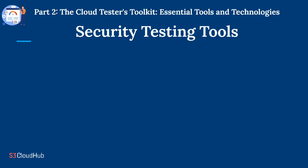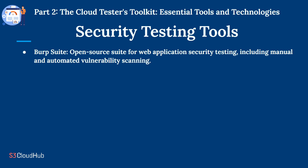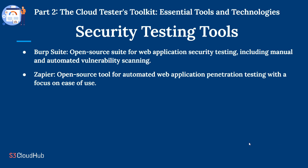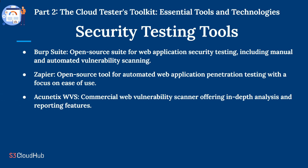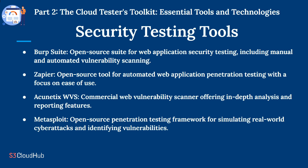Security testing tools: Burp Suite is an open-source suite for web application security testing, including manual and automated vulnerability scanning. OWASP ZAP is an open-source tool for automated web application penetration testing with a focus on ease of use. Acunetix WVS is a commercial web vulnerability scanner offering in-depth analysis and reporting features. Metasploit is an open-source penetration testing framework for simulating real-world cyber attacks and identifying vulnerabilities.